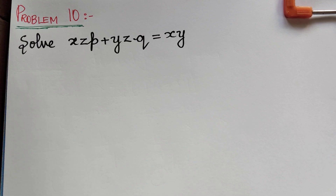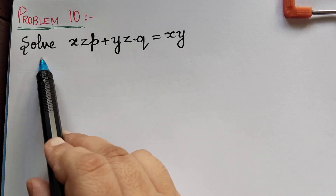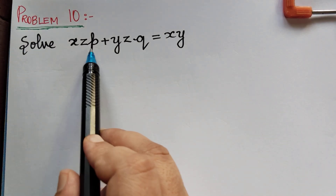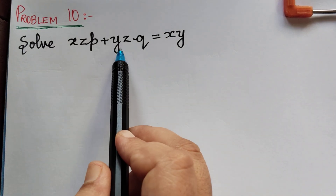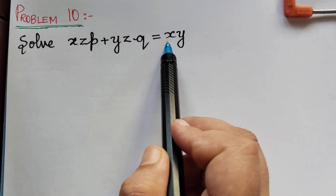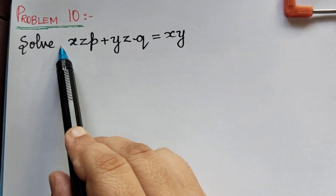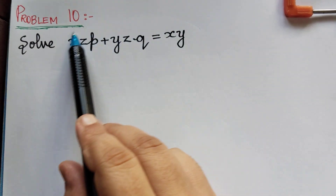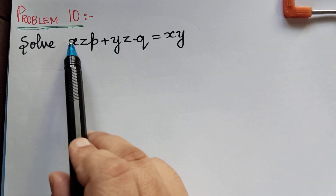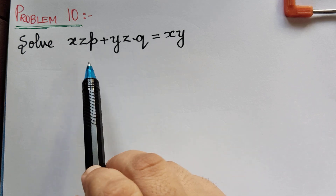Under the topic Lagrange's linear partial differential equations, here we have problem 10. The question is: solve xzp plus yzq is equal to xy. When we see the question itself, we understand that it is in Lagrange's form.